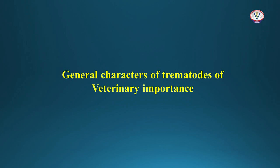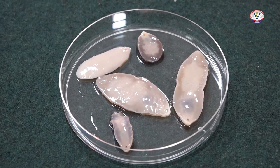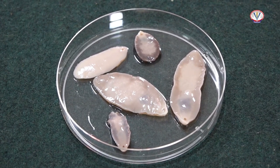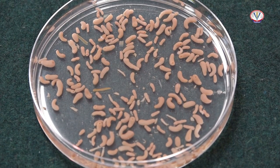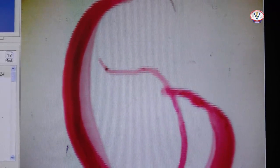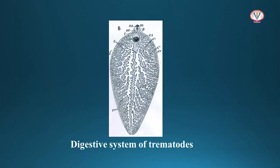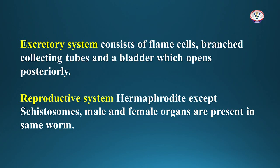General characteristics of trematodes of veterinary importance: Trematodes are dorso-ventrally flattened, leaf-like worms, but a few like the amphistomes have a thick fleshy body, whereas schistosomes are long and worm-like. The digestive system is incomplete, consisting of a mouth surrounded by an oral sucker, a muscular pharynx, esophagus, leading into an intestine usually divided into two blind caeca, but the anus is always absent. The excretory system consists of flame cells, branched collecting tubes, and a bladder opening posteriorly. Flukes are hermaphrodite, except the schistosomes, with male and female genital organs present in the same worm.